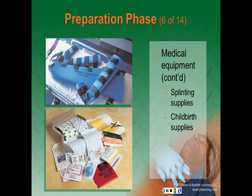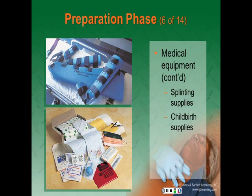Splinting supplies in adult and child sizes include traction splints; arm and leg splints in inflatable, vacuum, cardboard, plastic, foam wire, ladder, or padded board forms; triangular and roller bandages; a short backboard device; a long backboard; a head immobilization device; and cervical collars in an adjustable size or variety of sizes.